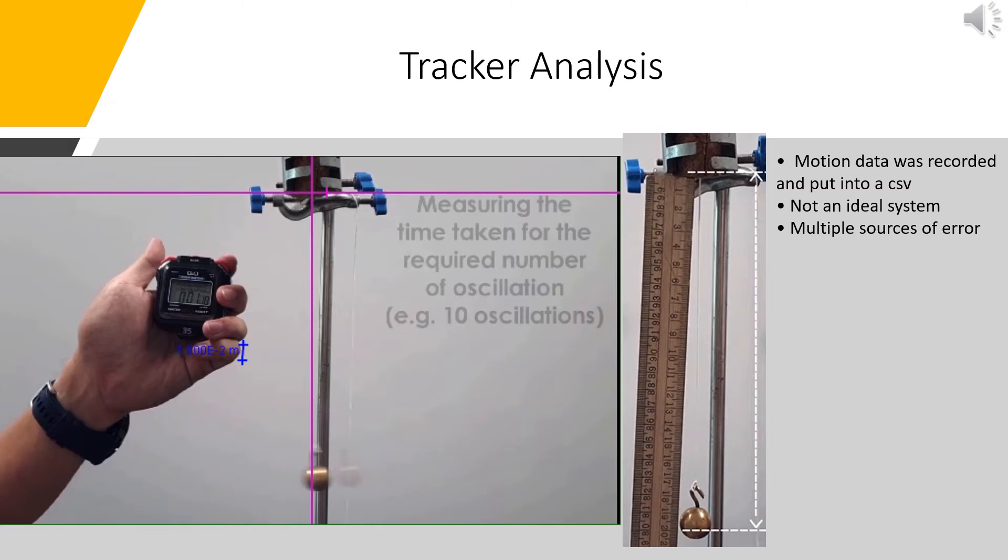I chose the point of connection as the origin and used the frame in the video where the man holds a ruler next to the string to calibrate Tracker. However, there are some sources of error in the video. First off, the frame rate is quite low, leading to rough data, which we will see later when we compare the model to the observations.